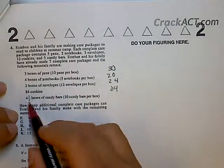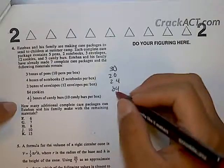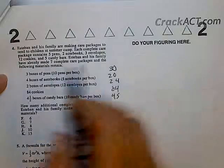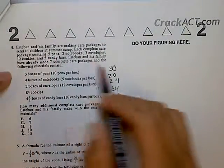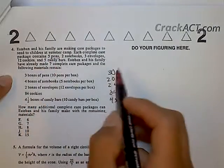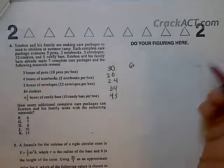You put 84, and then 4.5 boxes times 10 candy bars per box, so 4.5 times 10 gives you 45. Now what you look at is how much you need of each to make one care package. You need 5 pens, so you could just divide this by 5. 30 divided by 5 is 6, so you can make up to 6 care packages.